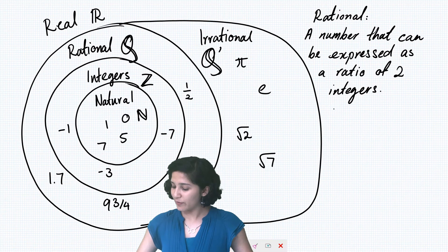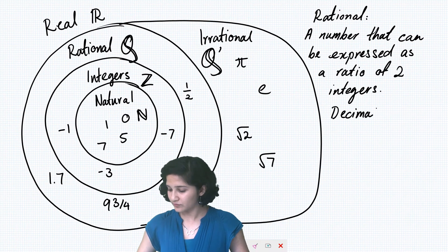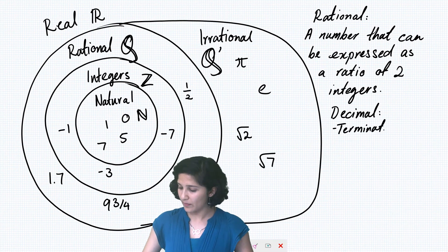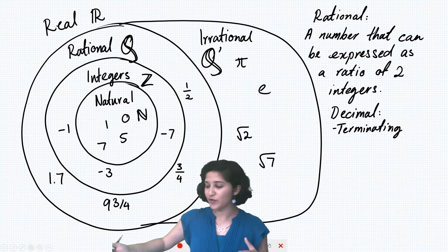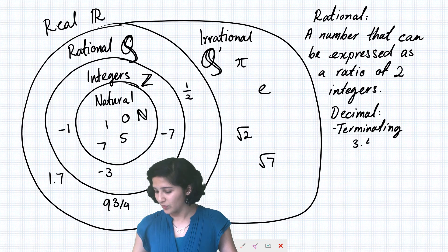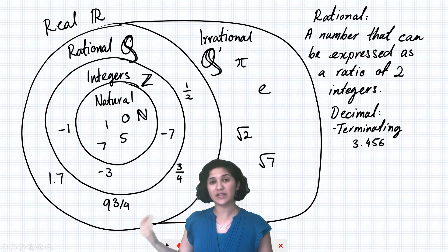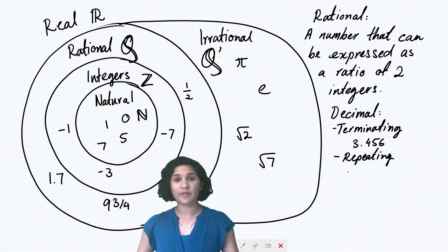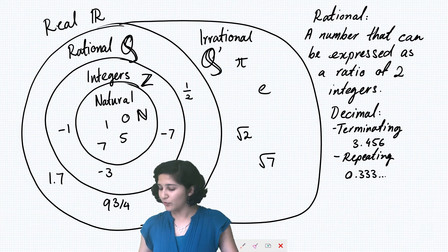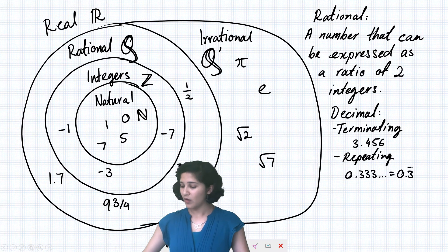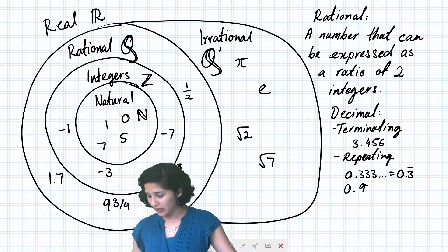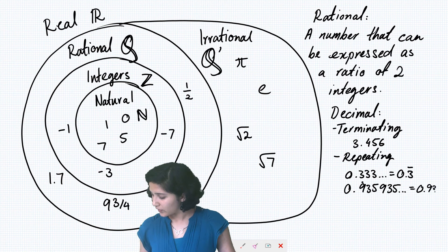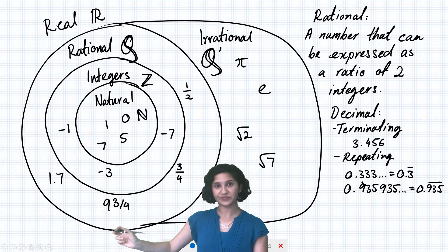So if we write those in a decimal form, we'll either get something that's terminating, so a decimal that comes to an end after a few decimal places, such as 3.456. Anything that comes to a stop is a terminating decimal or a repeating decimal. So something like 0.333 that repeats forever, so 0.3 repeated. Or something with a longer repeating chain, 9, 3, 5, 9, 3, 5, and so on. So 0.935 with a bar on top just means that chunk repeats over and over again.